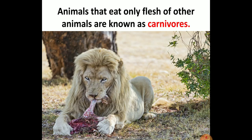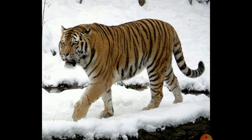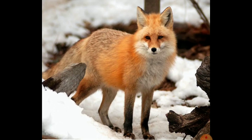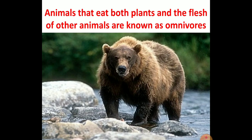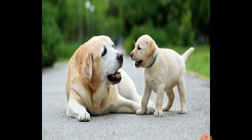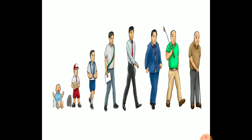Animals that eat only the flesh of other animals are known as carnivore animals. For example, lion, tiger, leopard, wolf, and fox are examples of carnivore animals. Animals that eat both plants and the flesh of other animals are known as omnivore animals. For example, bear, crow, ant, dog, and human beings are examples of omnivore animals.